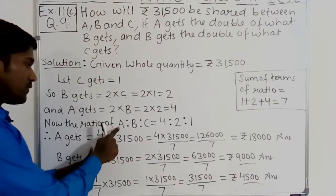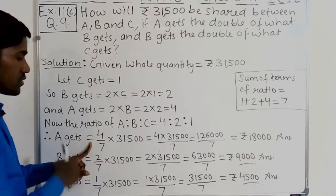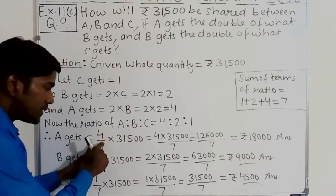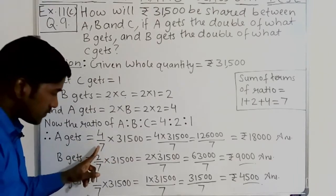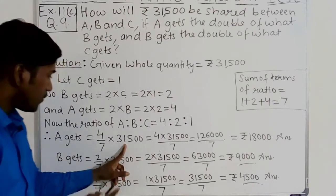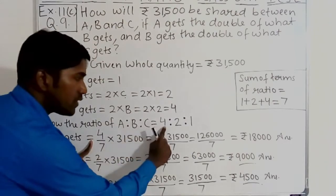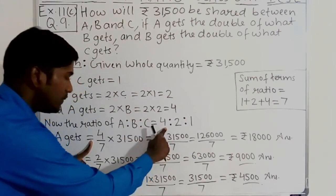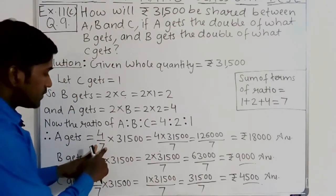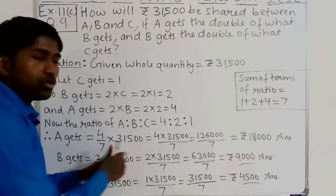Therefore, A gets the first part, B the second part, and C the third part. A gets equal to the first part. As we know, the first part equals the first term of the ratio divided by the sum of terms of the ratio, multiplied by the whole quantity. So A gets equal to the first term of the ratio, which is 4, divided by the sum of terms of the ratio, which is 7.